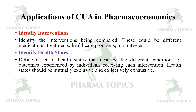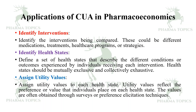Health states should be mutually exclusive and collectively exhaustive. Then assign utility values to each health state. Utility values reflect the preference or value that individuals place on each health state. These values are often obtained through surveys or preference elicitation techniques.